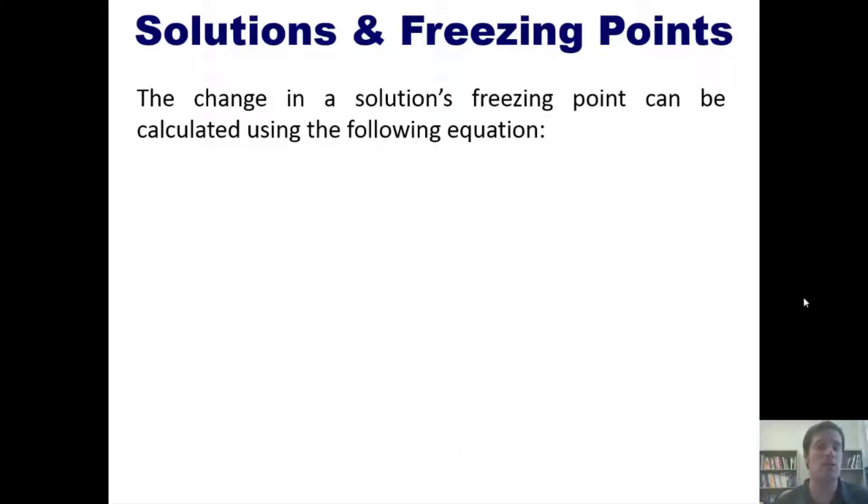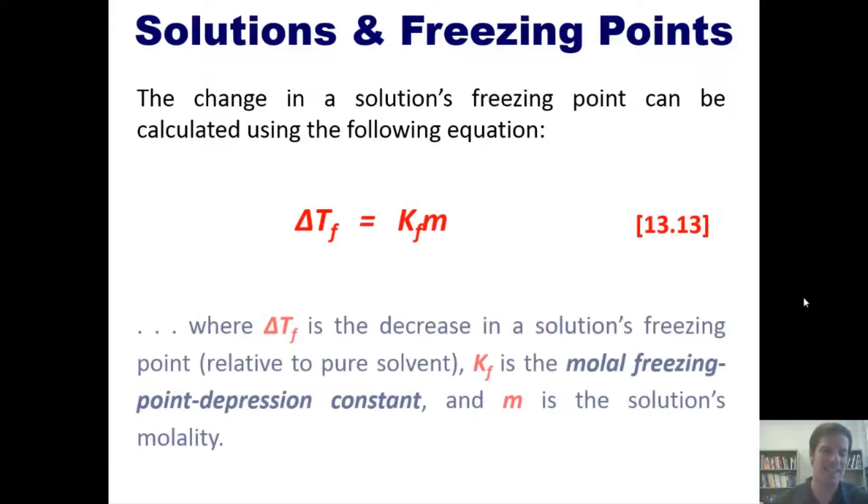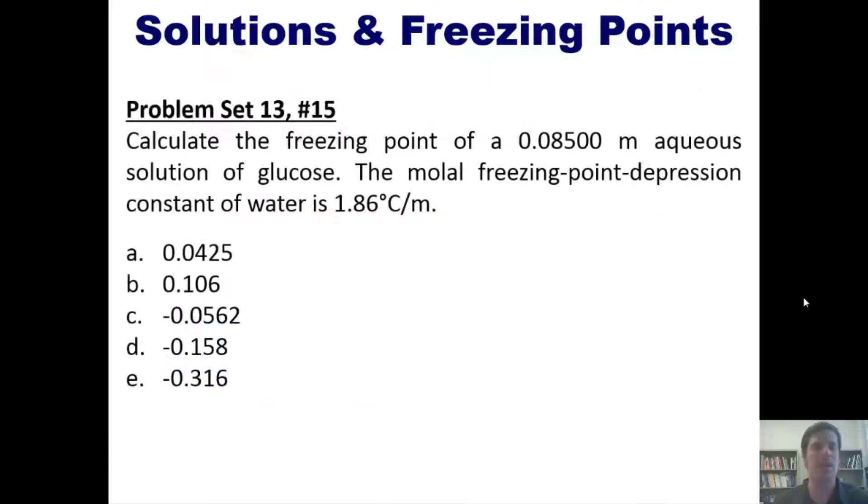The change in a solution's freezing point can be calculated using the following equation, where ΔTf is the decrease in the solution's freezing point relative to that of the pure solvent, Kf is the molal freezing point depression constant, and m is the solution's molality. Here's a problem: calculate the freezing point of a 0.08500 molal aqueous solution of glucose. The molal freezing point depression constant of water is 1.86°C per molal. As usual, I'm not going to answer this question in this video, but I'll post a link to a separate video which you're welcome to watch.